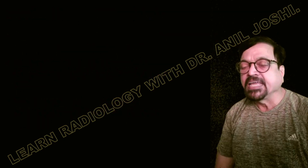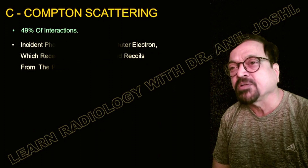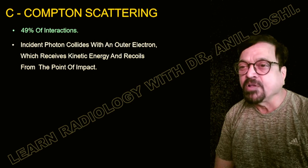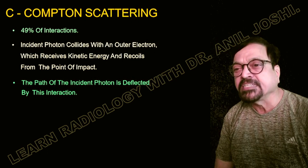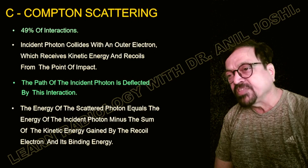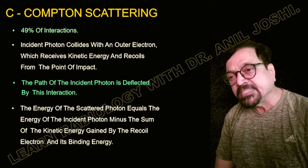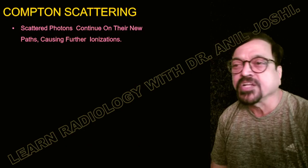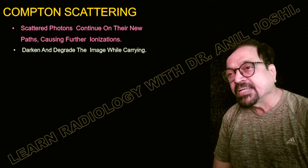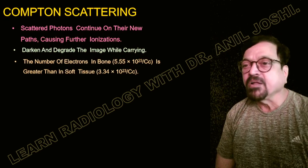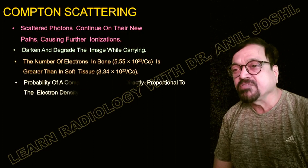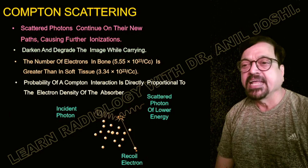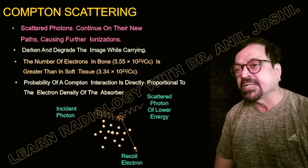Third is Compton scattering, which contributes to about 49% of interactions. The incident photon collides with an outer electron, which receives kinetic energy and recoils from the point of impact. The path of the incident photon is deflected by the interaction. The energy of the scattered photon equals the energy of the incident photon minus the sum of the kinetic energy gained by the recoil electron and the binding energy. The scattered photon continues on its new path, causing further ionization, darkening and degrading the image. The probability of a Compton interaction is directly proportional to the electron density of the absorber.